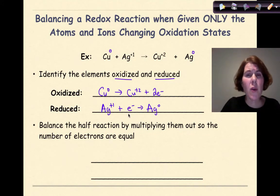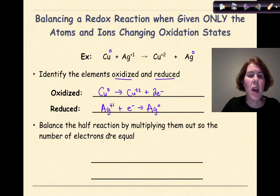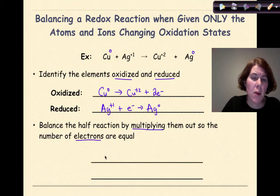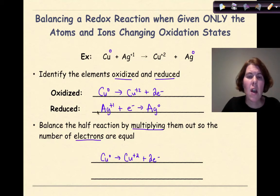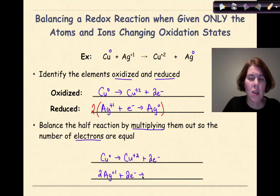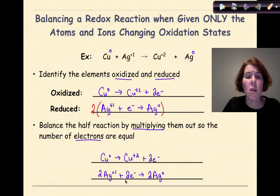Unlike the other situations before where we had the number of electrons lost automatically equaling the number of electrons gained, we've got to manipulate this a little bit. We're going to balance the half reactions by multiplying them out so the number of electrons are equal. If I look at two and one, I know I'm going to need to multiply this whole reduction half reaction by two. So I'm going to recopy the top: Cu zero yields Cu plus two plus two electrons. Now I'm going to multiply the entire reduction half reaction by two. As a result, I'm going to have two Ag plus one plus two electrons yields two Ag zero. Now I can see that charge is conserved — the number of electrons lost has equaled the number of electrons gained.